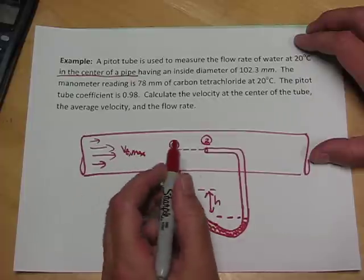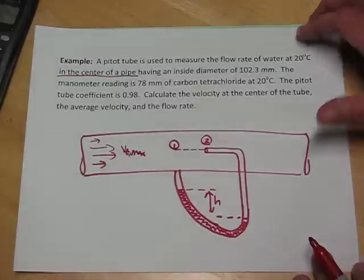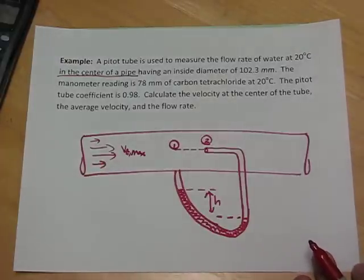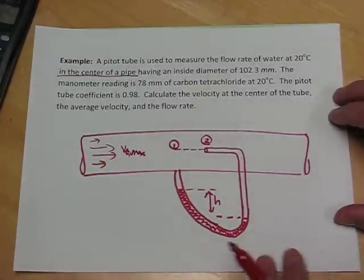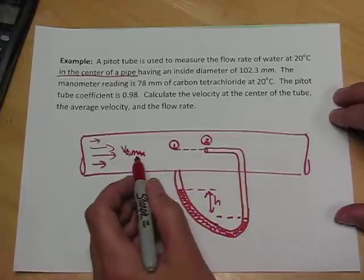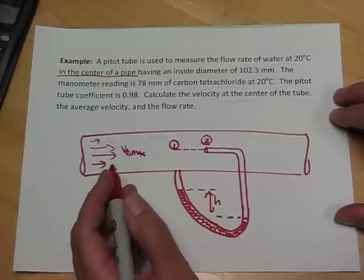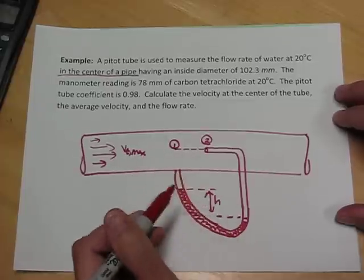And so by analyzing two different problems, one the dynamic problem that has the motion of the fluid in it, and the other the static problem, which is the manometer problem, we can put it all together to get a measurement of the velocity maximum, the velocity that's intercepted by the pitot tube, and the reading on the manometer.